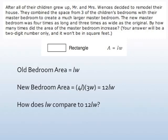So how does the old bedroom area compare to the new bedroom area? Well, we have to multiply four and three together to get the answer. So it looks like the area is going to be multiplied by twelve. In other words, the old area is going to be multiplied by twelve to get the new area.